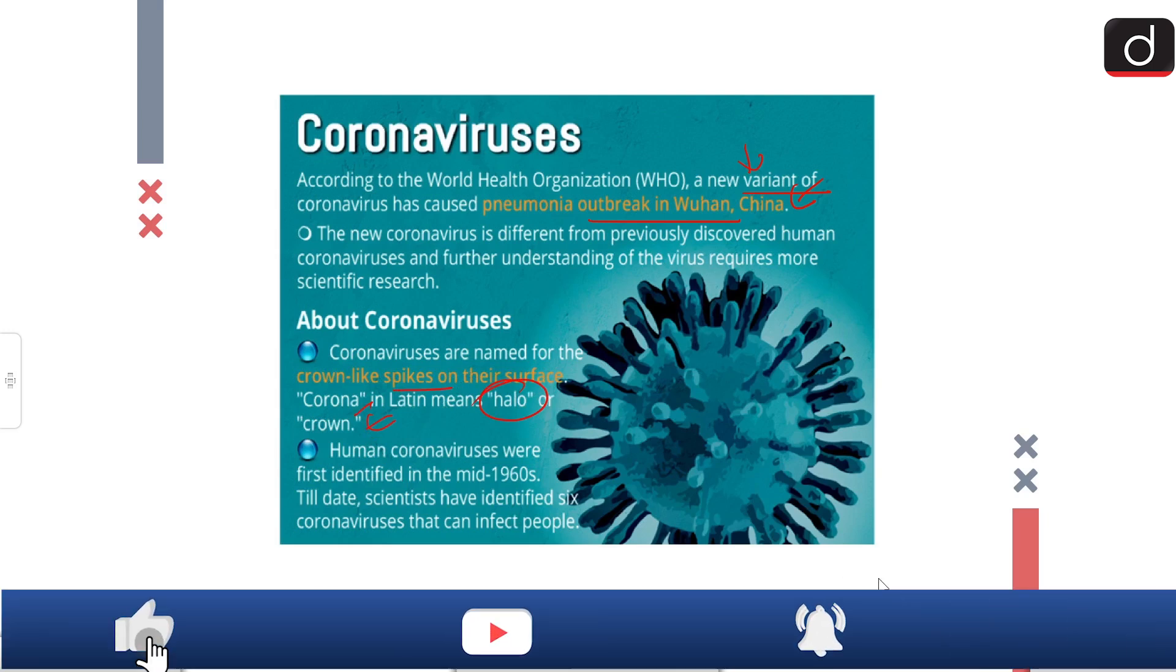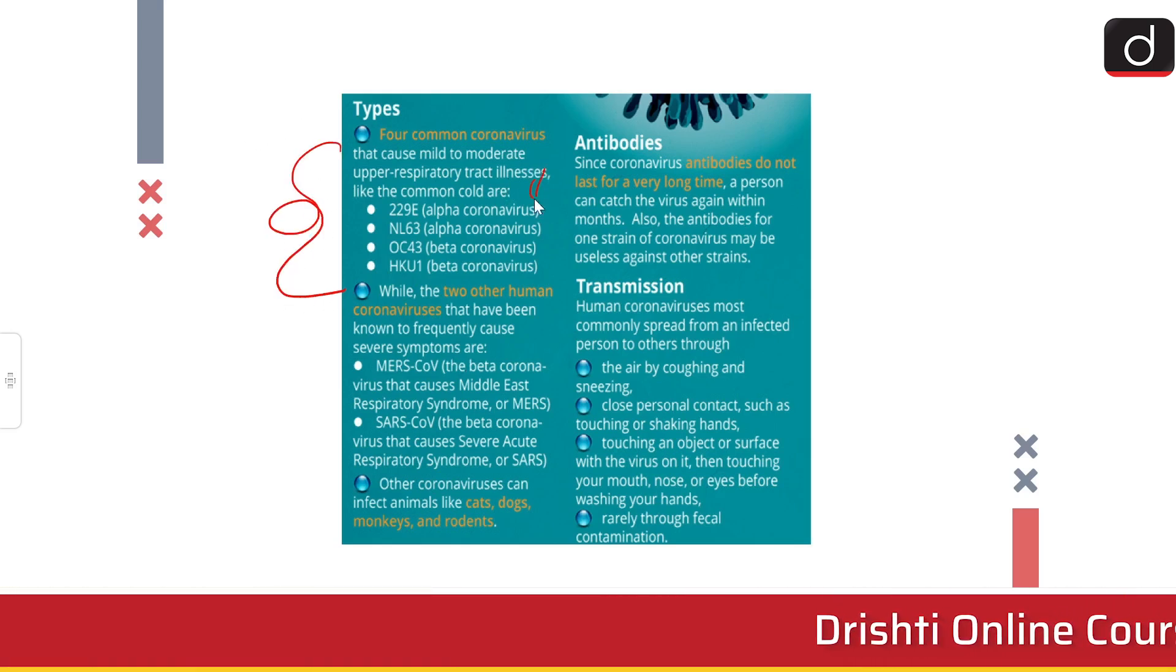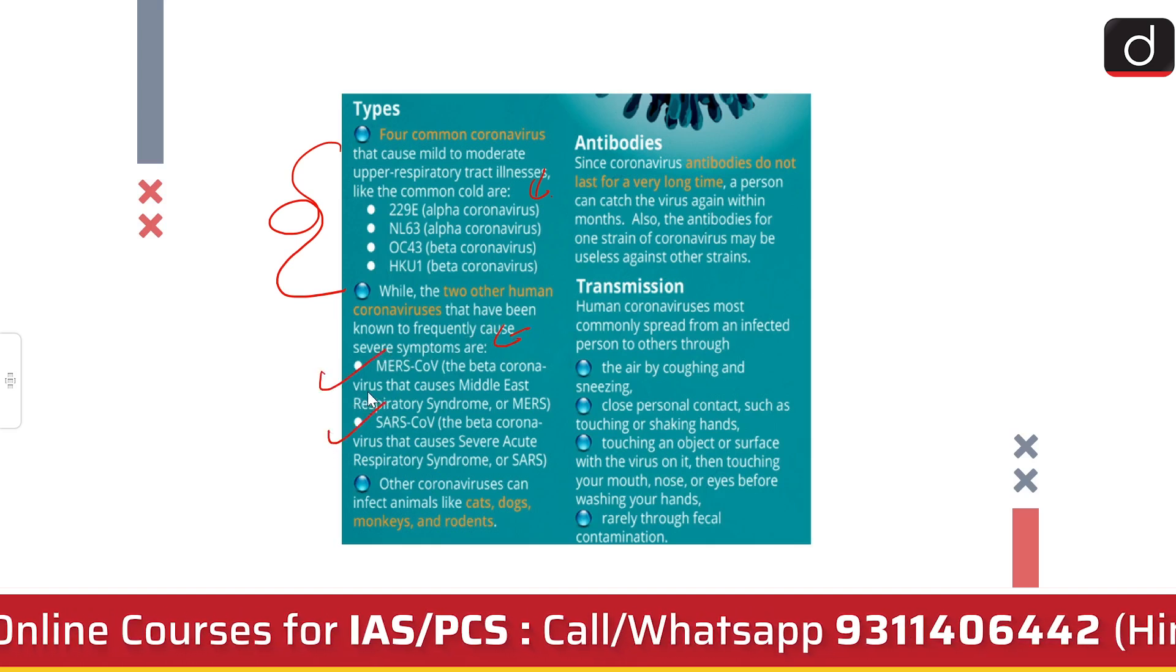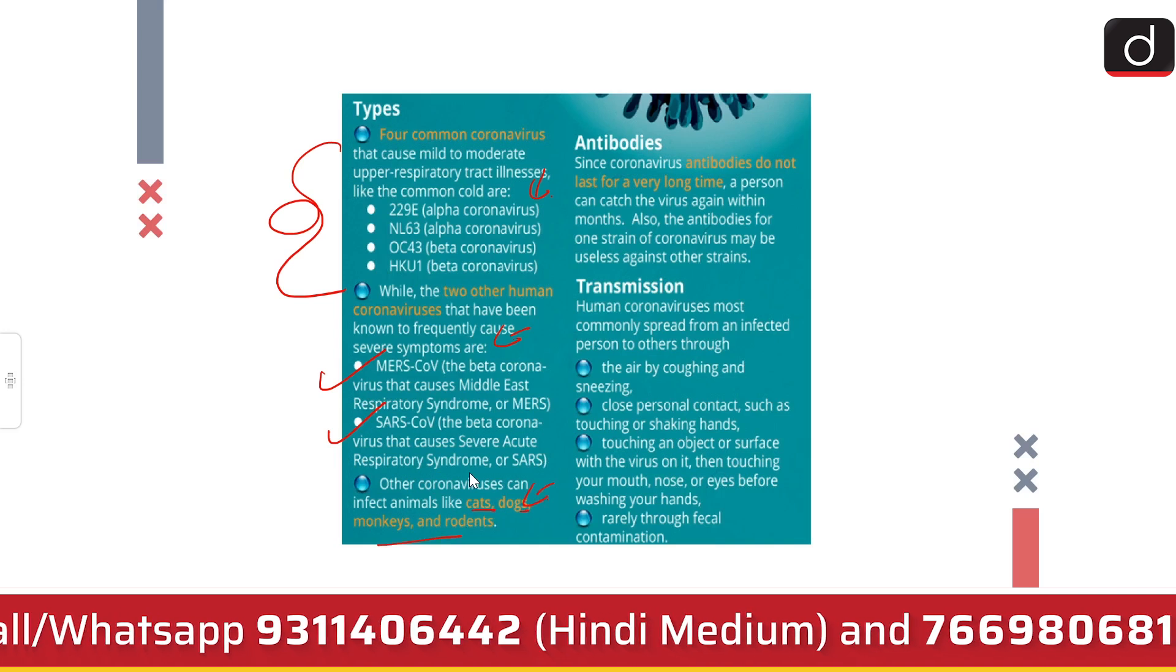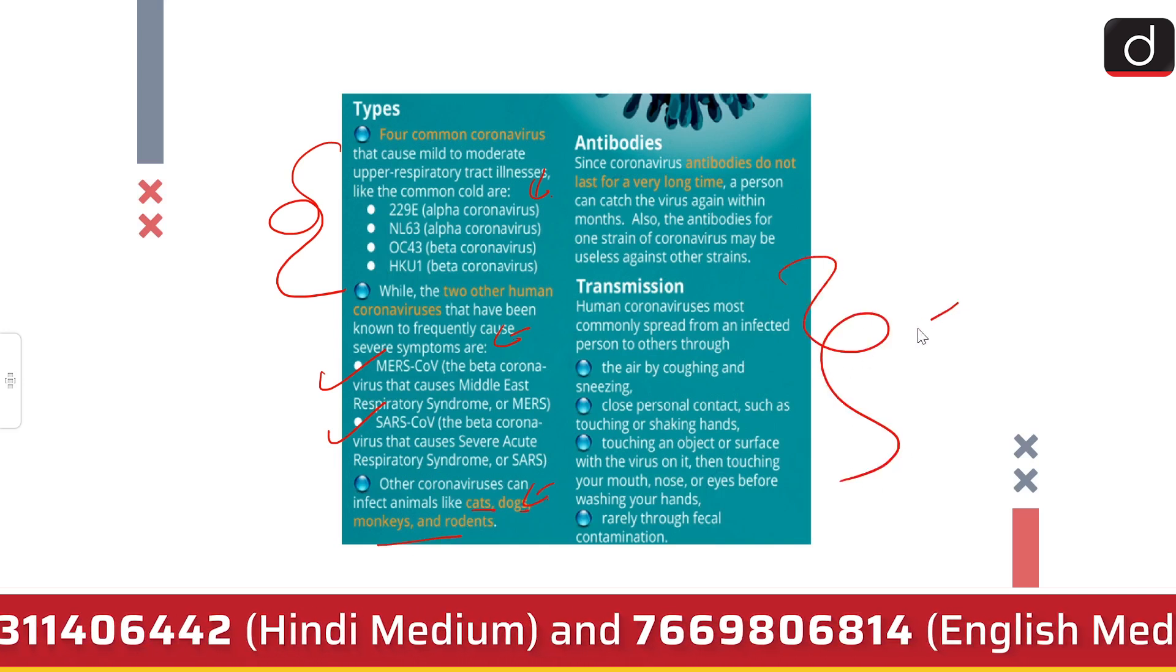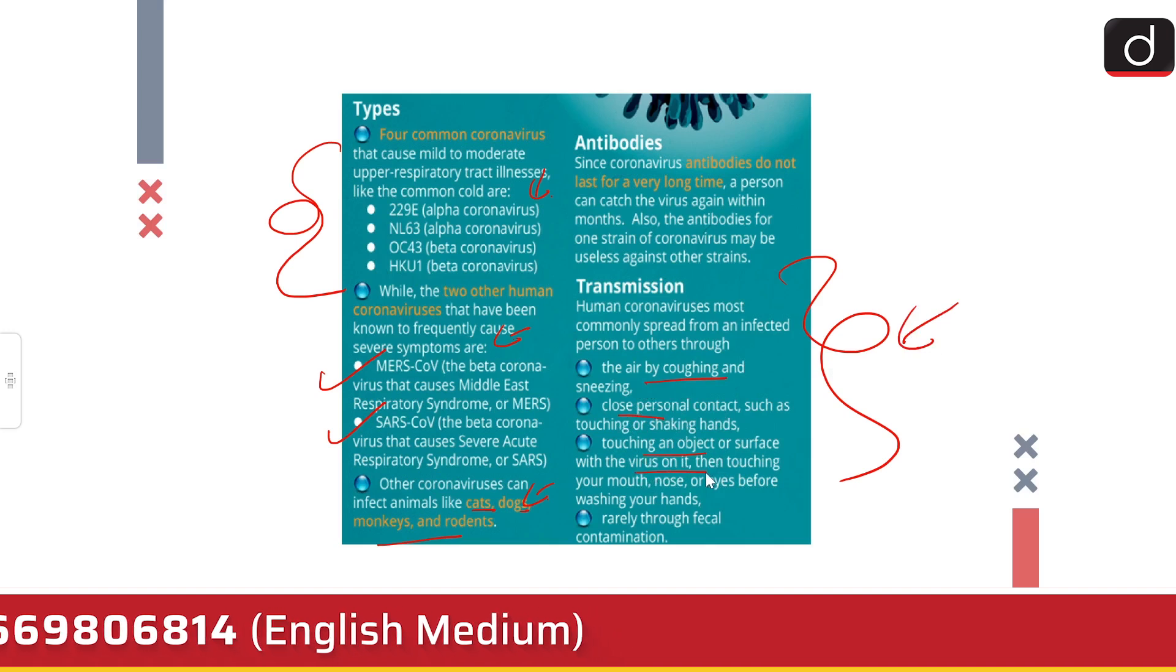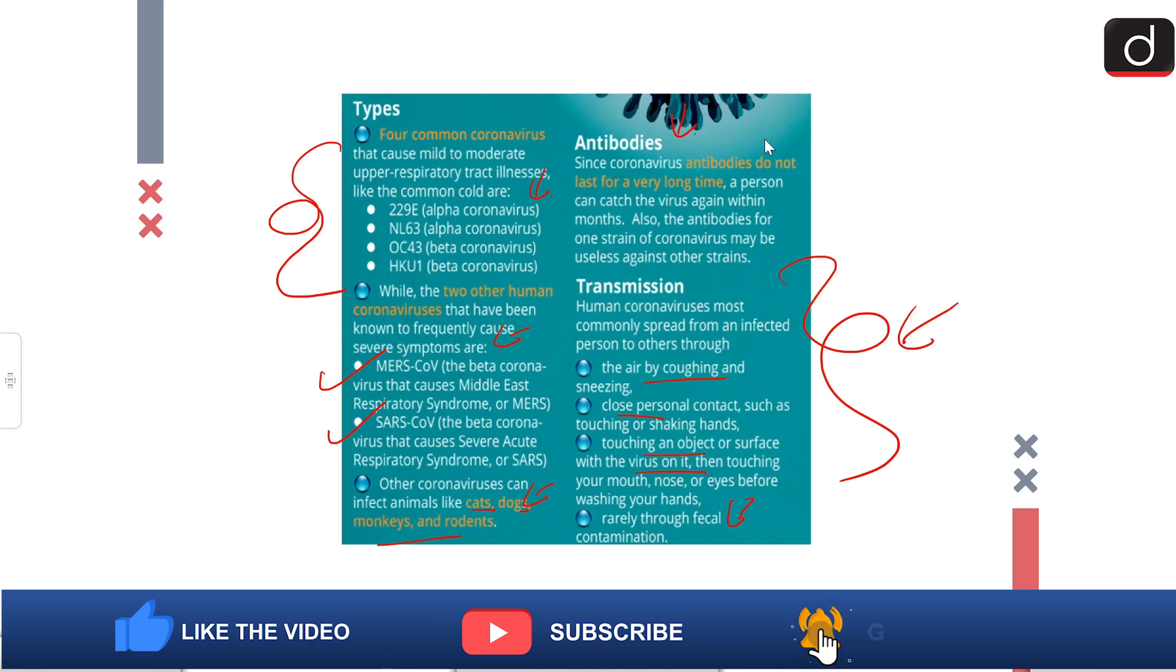Human coronaviruses were first identified in the mid-1960s. Till date, scientists have identified six coronaviruses that can infect people. Two human coronaviruses frequently cause severe symptoms: MERS and SARS-CoV. Other coronaviruses can also infect mammals and animals like cats, dogs, monkeys, and rodents. It is transmitted through the air by coughing and sneezing, close personal contact, touching an object with virus on it then touching your eyes, nose, or face without washing hands, and through fecal contamination.